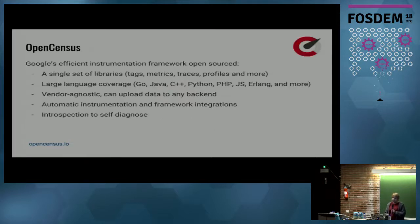So OpenCensus provides a single set of libraries. Currently, we have a tag library, metrics, and traces, and we will have more in the future. We have language support for Go, Java, C++ right now. There are more languages coming: Python, PHP, JavaScript, C#, and Erlang are next. Our libraries are vendor agnostic and can upload data to any backend. We have support for Prometheus, Zipkin, Jaeger, and some APM vendors.